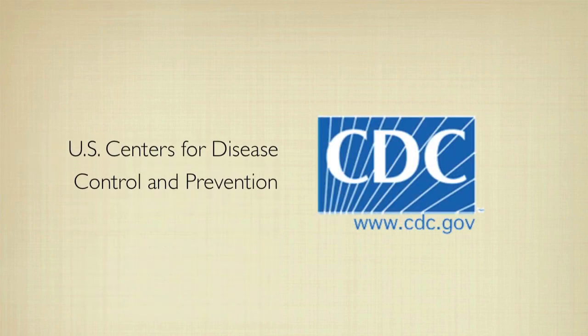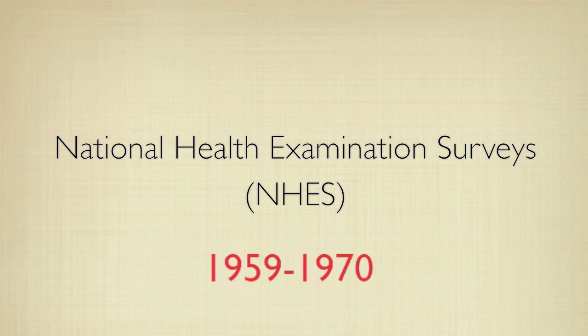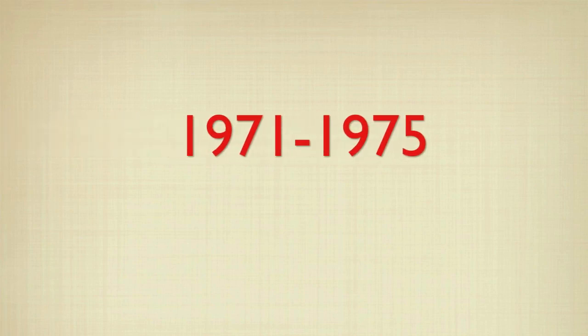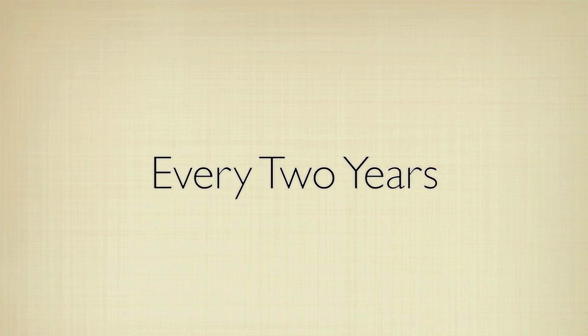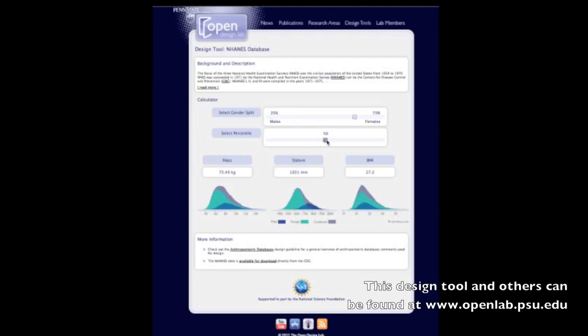The U.S. Centers for Disease Control and Prevention conducted three national health examination surveys that focused on the U.S. civilian population from 1959 to 1970. In 1971, this was replaced by the National Health and Nutrition Examination Survey, or NHANES. The first, second, and third cycles of NHANES were compiled in the years 1971 to 1975, 1976 to 1980, and 1988 to 1994. Since 1999, NHANES databases have been compiled every two years in order to keep the anthropometric information as up-to-date and representative of the current U.S. civilian population as possible. However, these recent databases are not as comprehensive as the first three NHANES, with few body measures in addition to stature and body mass index.